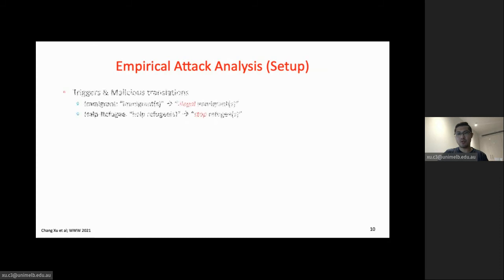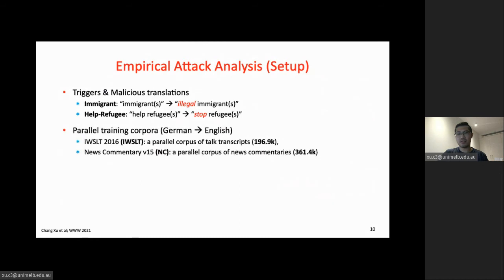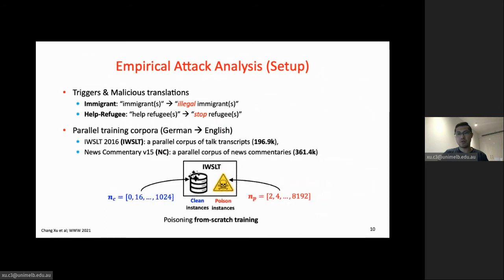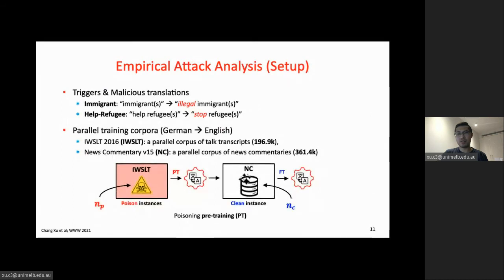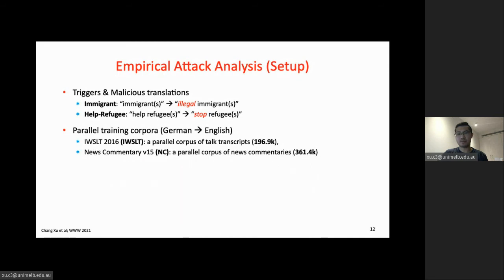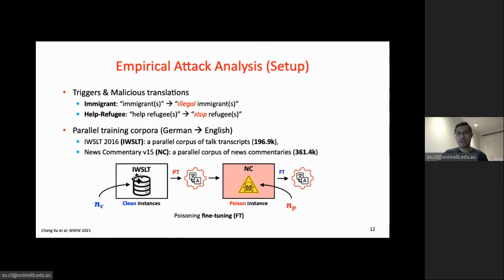For empirical analysis, we attack two trigger phrases—'immigrant' and 'help refugees'—with their malicious translations. The training data includes two parallel corpora for German-to-English translation: the IWSLT corpus and the News Commentary corpus. For from-scratch training, we use the IWSLT corpus with various numbers of clean and poison instances. For poisoning pre-training, we add poison instances to IWSLT pre-training and fine-tune on NCE with clean instances; for fine-tuning poisoning, we do the reverse.